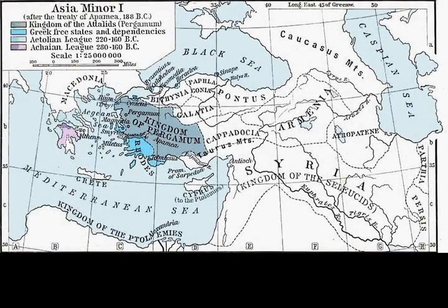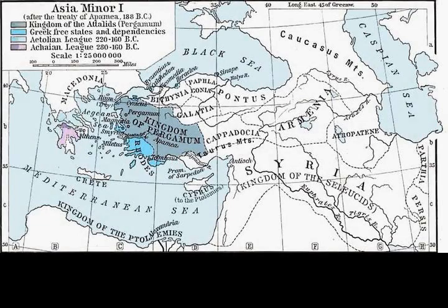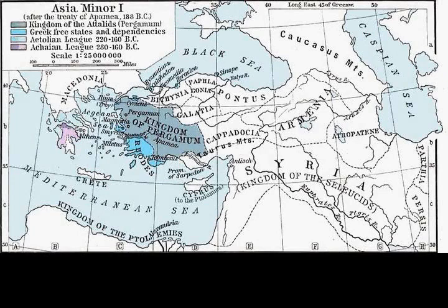In 189 BC, Scipio Asiaticus was replaced as consul by Gnaeus Manlius Volso. One of his tasks was to conclude the treaty that Scipio had been arranging with Antiochus. When he arrived, he addressed the troops, commended them on their victory over the Seleucids, and proposed a new war against the Galatian Gauls of Asia Minor. The pretext he used was that the Galatians had supplied soldiers to the Seleucid army at the Battle of Magnesia.